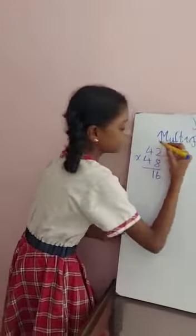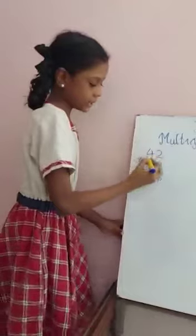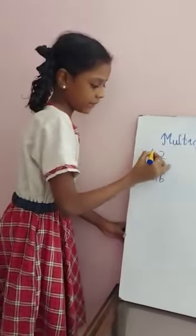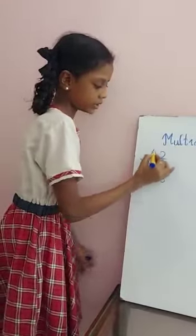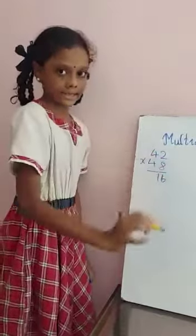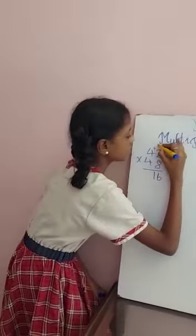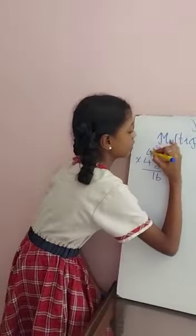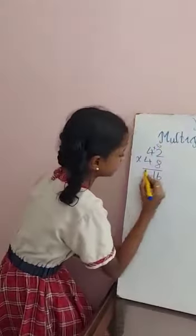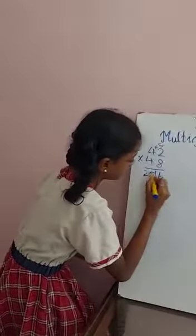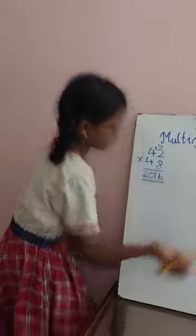So next, in the tens place number, if these two numbers are the same, we need to multiply with their successor. 4 times 5 is 20. So this is the answer.